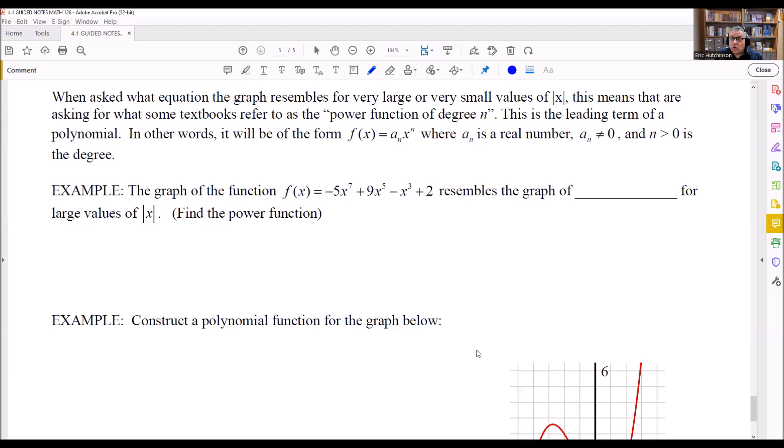When asked what equation the graph resembles for very large or very small values of absolute value of x, this is really what they refer to as the power function. It's basically an equation that the graph resembles, and it's related to end behavior. We actually use that for end behavior because with end behavior we want to look at the leading coefficient.